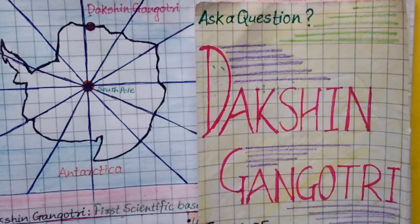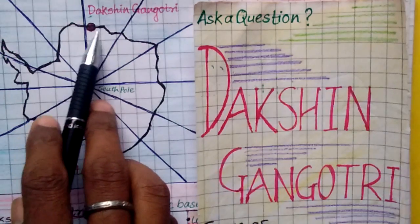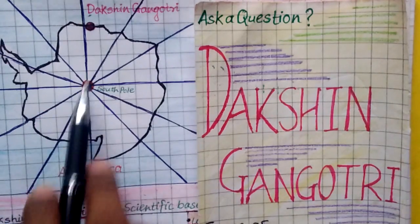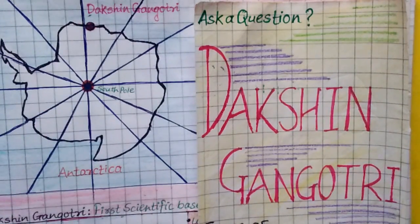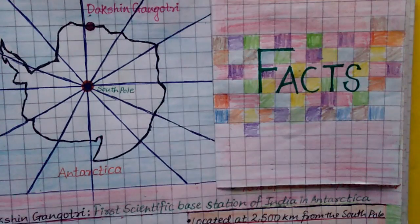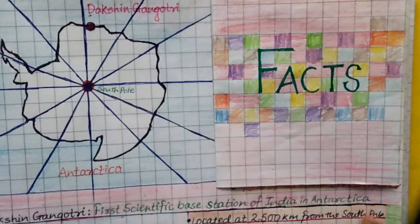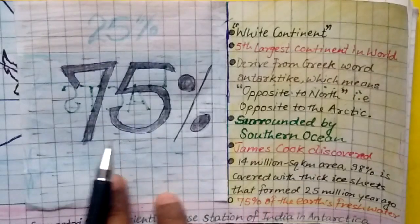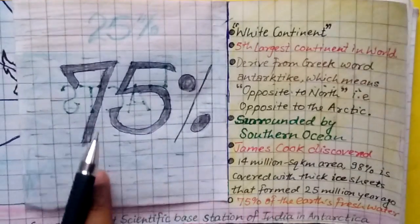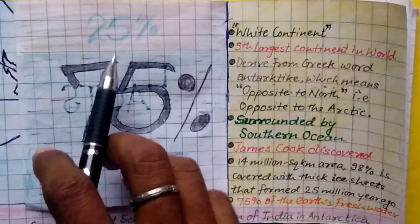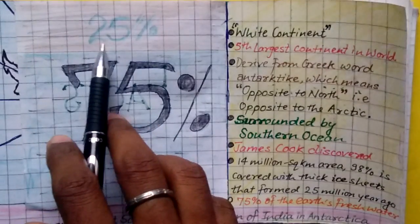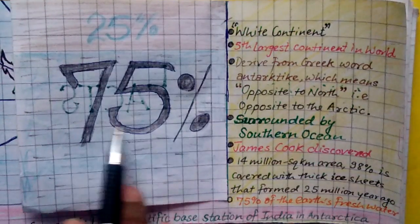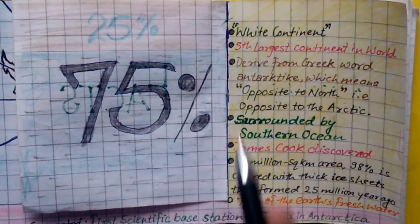India has not just one scientific base in Antarctic — I will tell you about how many bases there are in a later video. First, let's start with some facts about Antarctic. The first fact: 75 percent of Earth's fresh water is in Antarctic only.